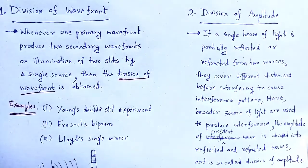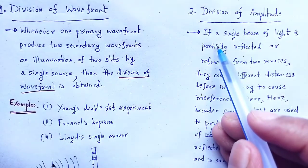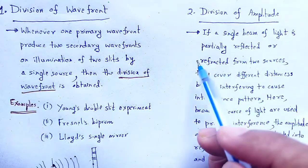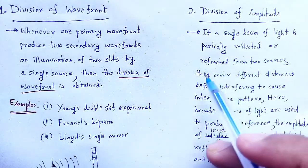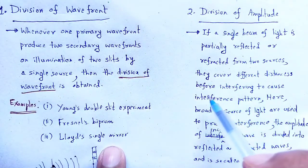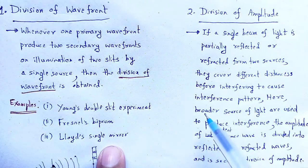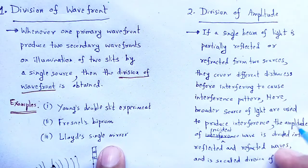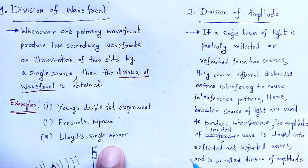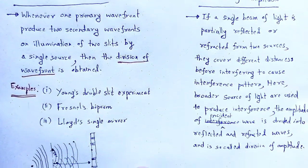Next, division of amplitude. If a single beam of light is partially reflected or refracted, the two resulting beams cover different distances before interfering to cause an interference pattern. Here, a broader source of light is used to produce interference, and the amplitude of the incident wave is divided into reflected and refracted waves — this is called division of amplitude.